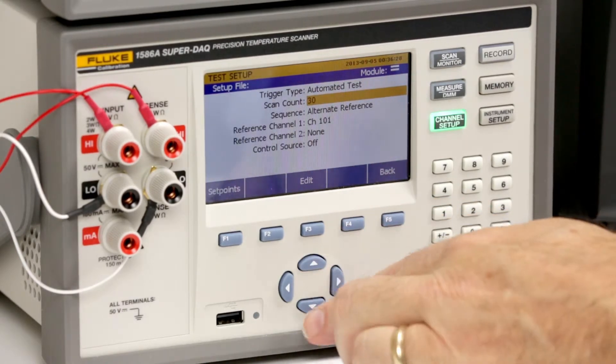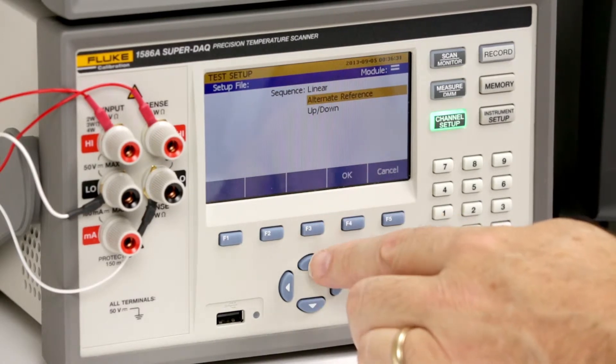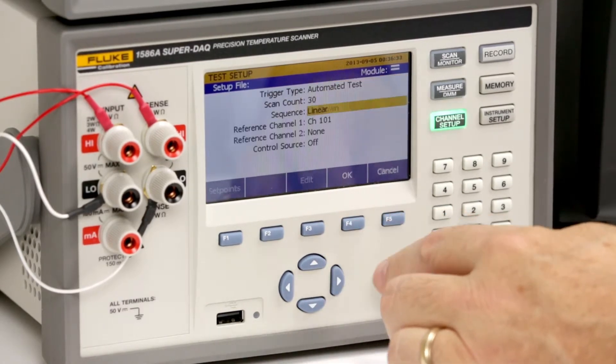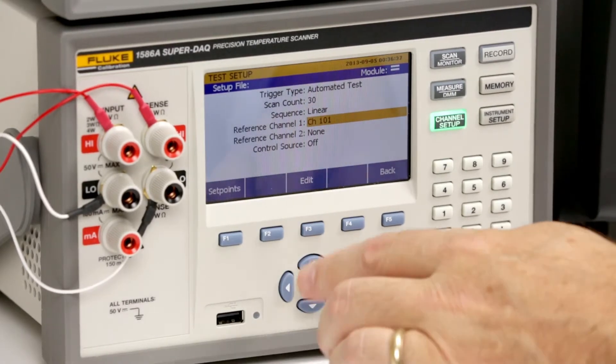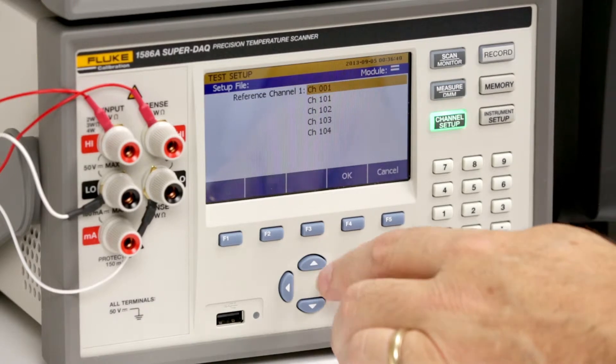Set the sequence to linear, which means the 1586 will scan the reference channel and unit under test channels sequentially. Designate a reference channel. We'll select the front panel reference channel 1.